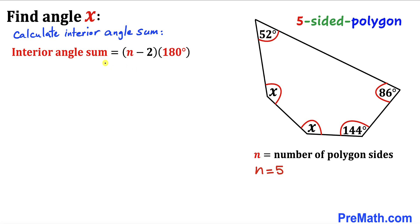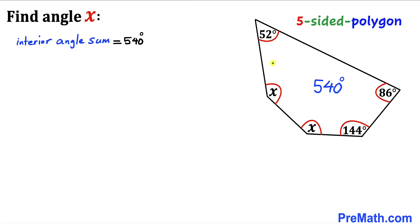So let's calculate the interior angle sum by plugging in this value. In our case, it's (5 - 2) times 180 degrees. That's going to give us 3 times 180 degrees. That means our interior angle sum turns out to be 540 degrees. So the interior angle sum for this five-sided polygon is 540 degrees.